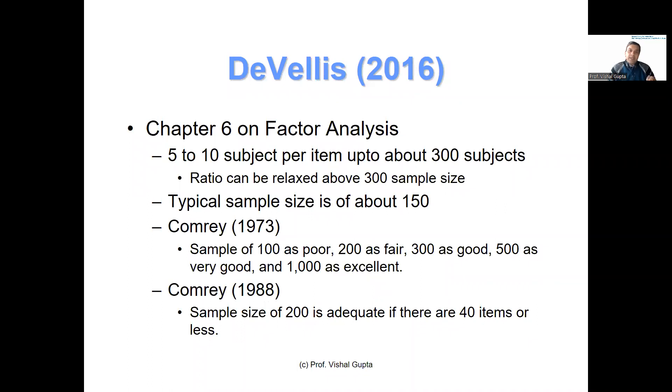DeVellis in his book on scale development, Chapter 6 on factor analysis, writes that 5 to 10 subjects per item is right until you have about 300 subjects in your sample size. But this ratio can be relaxed for sample sizes of 300 or more. He also reports that if you look at all research that is published on scale development and factor analysis, the median sample size is about 150.